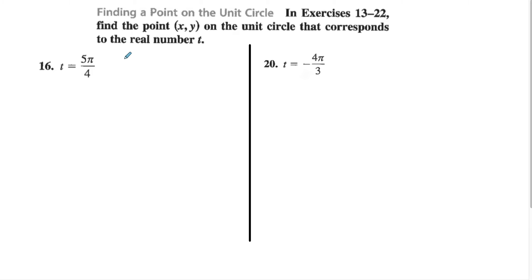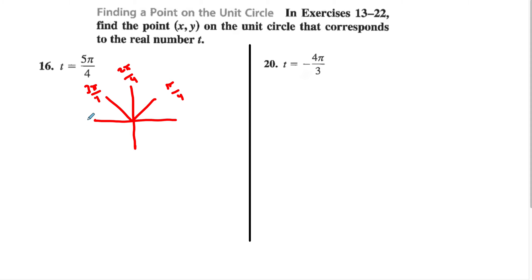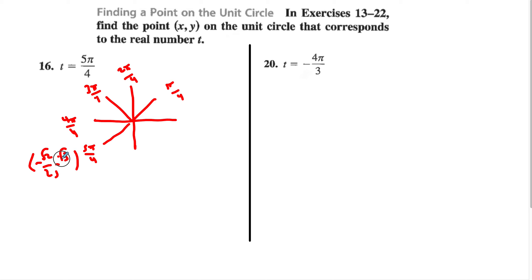Find a point on the unit circle that corresponds to 5π/4. Remember, counting from π/4: 1π/4, 2π/4, 3π/4, 4π/4, and 5π/4 would be right here. So 5π/4 is going to have root 2 over 2 for both coordinates — except because it's in the third quadrant, both will be negative. So the point is (−√2/2, −√2/2).